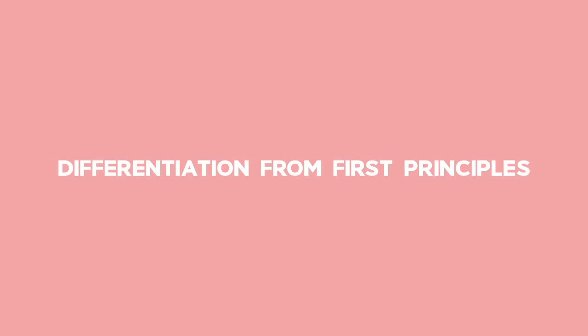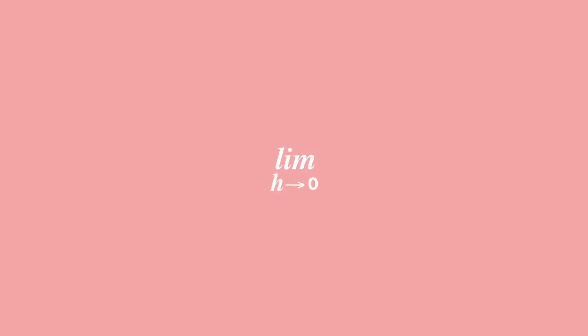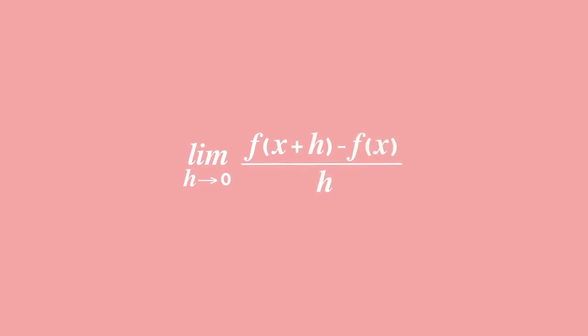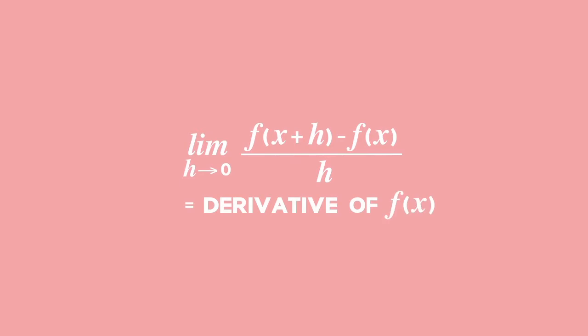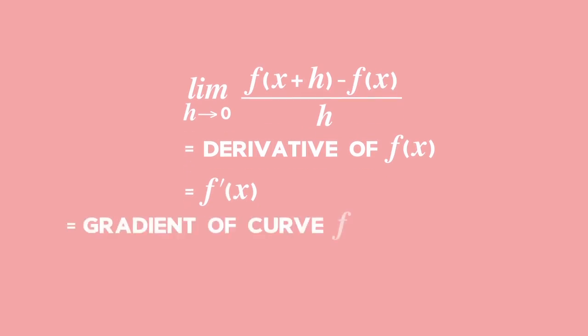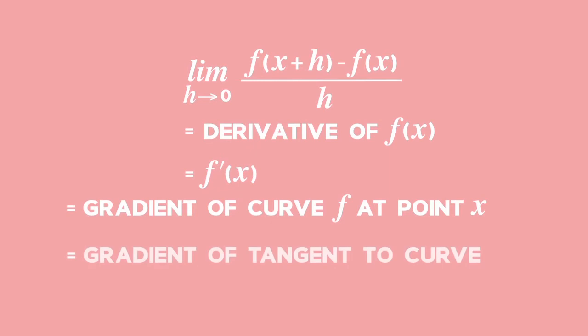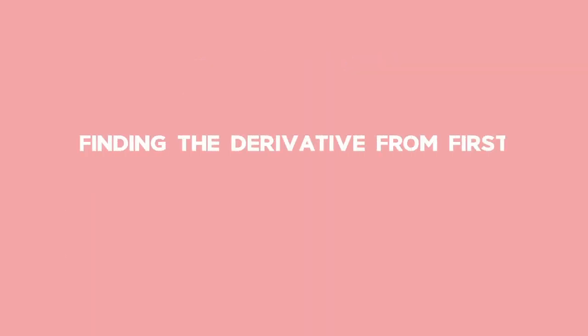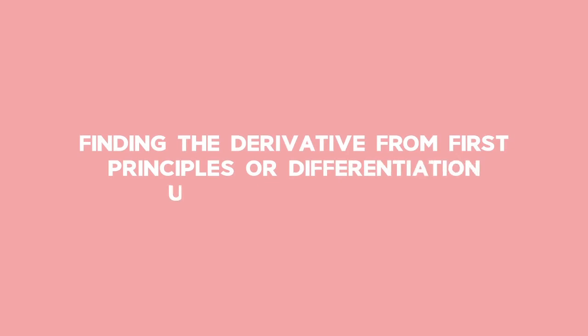Differentiation from first principles. To find the limit of the gradient as h tends to 0, we use the formula: the limit as h tends to 0 of f of x plus h minus f of x all over h. We call this the derivative of the function and use the notation f prime of x. The derivative is the gradient of a curve at a point, or the gradient of the tangent to the curve at a point. This method is called finding the derivative from first principles, or differentiation using the definition.